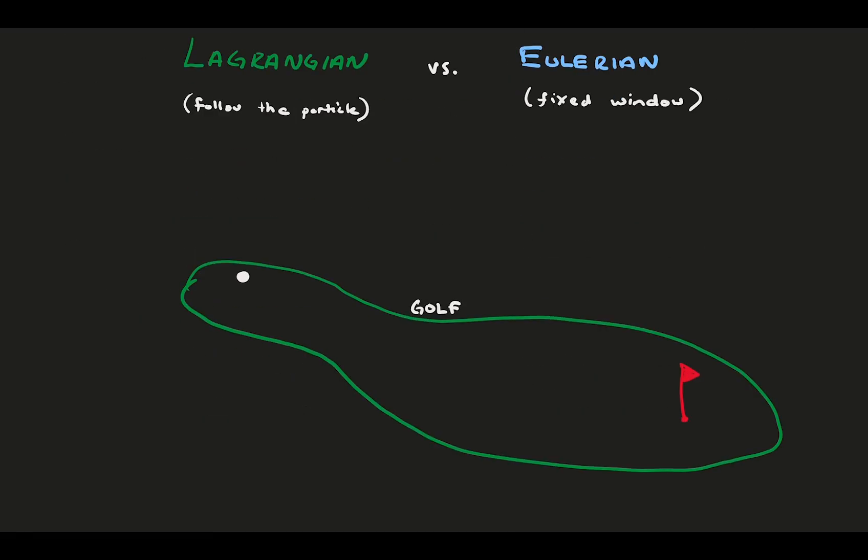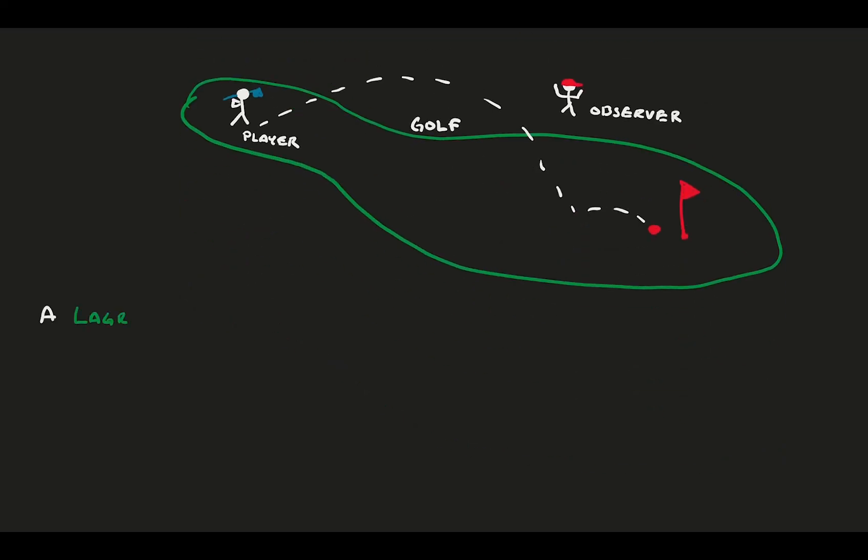There are a bunch of different analogies that help explain these two perspectives, and my favorite is golf. Consider a golfer on the course striking the ball. Maybe this is a golf tournament because we show up as spectators to watch. Our intent is to observe the tournament and to be able to describe the outcome from our observations. Essentially, we need to figure out who wins.